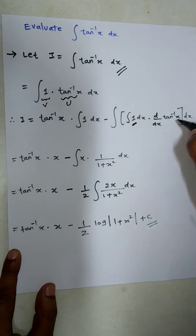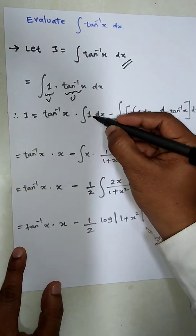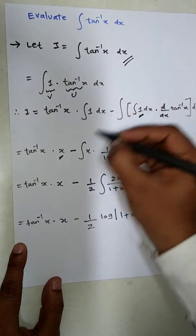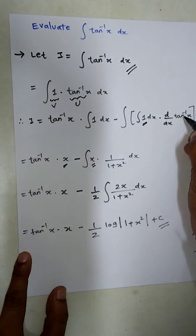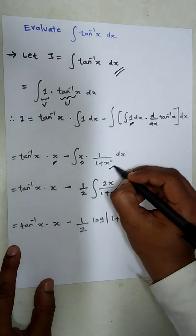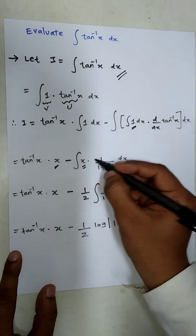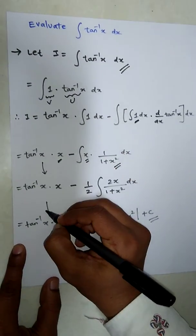This will remain as it is, tan inverse x times x minus integration of x times derivative of tan inverse, which is 1 upon 1 plus x square. In this case, this term will remain as it is throughout.